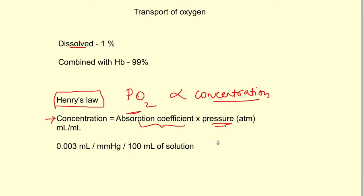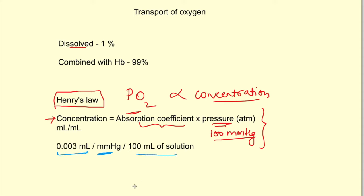Using this formula, we can determine how much oxygen is dissolved in blood at a partial pressure of 100 mmHg — the arterial partial pressure. Solving the equation, we find that for 1 mmHg of oxygen partial pressure, 0.003 ml of oxygen is dissolved in 100 ml of solution. This lets us calculate oxygen in dissolved form in both arteries and veins.